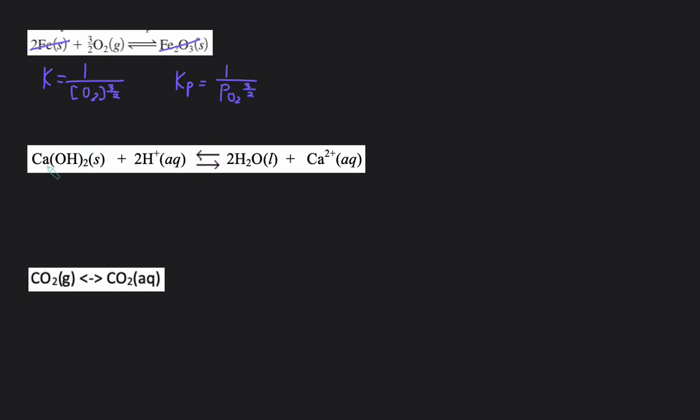Next one, again, start off by crossing solid and liquid solid, cross out the solid here and the liquid here. Both of these are aqueous, so we'll use this concentration. K equals the concentration of Ca2 plus divided by the concentration of H plus squared because of the coefficient.